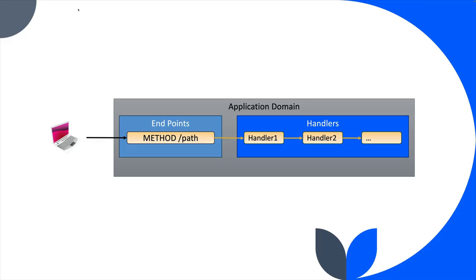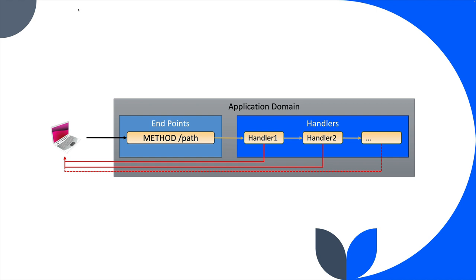I've simplified our diagram to show that we have an endpoint with an HTTP method — GET, POST, DELETE, all that — and a path, and of course multiple handlers. Any one of these handlers could return to the user, but if that happens it short-circuits the chain and no handler after it gets called. This is useful for things like inserting a request ID or logging for all requests.